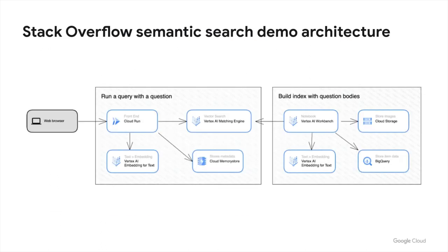The Stack Overflow demo architecture has two parts. First, building a Matching Engine index with Vertex AI Workbench and the Stack Overflow dataset in BigQuery. And second, processing vector search requests with Cloud Run and Matching Engine.